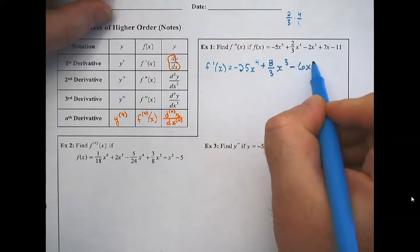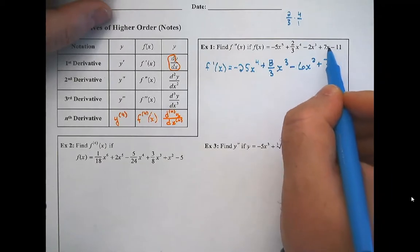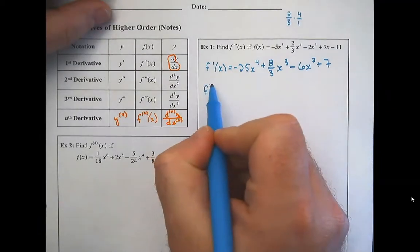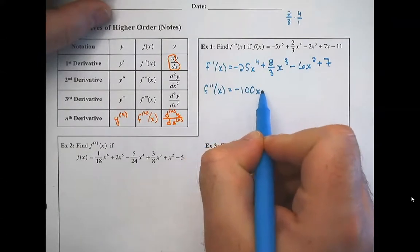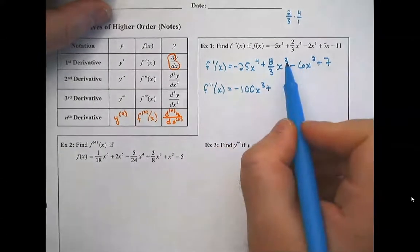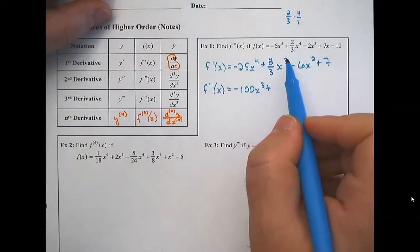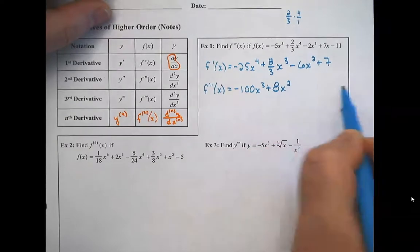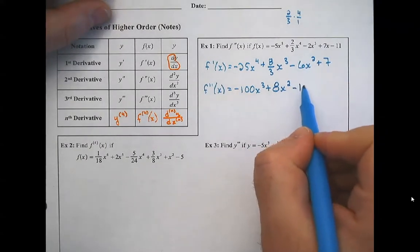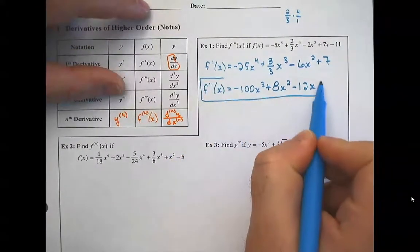Negative three times two is negative six, take away one gives negative seven. The derivative of a constant is zero, so that term disappears. The derivative of x to the one means I subtract one and have no x remaining. Now the second derivative is the derivative of this first derivative: four times negative 25 is negative 100. There's a shortcut where multiplying by three and dividing by three cancel, leaving just eight. Six times two is negative twelve, and the derivative of x gives just the constant seven.